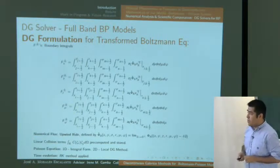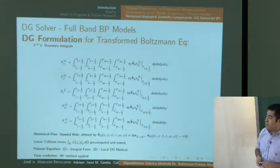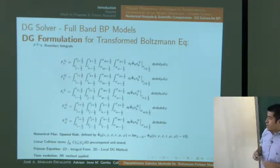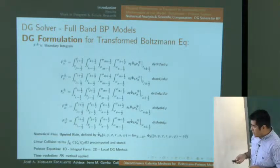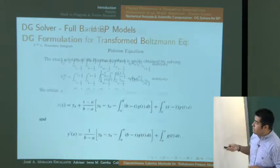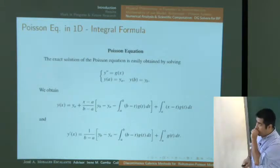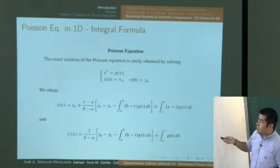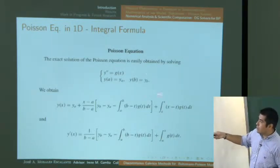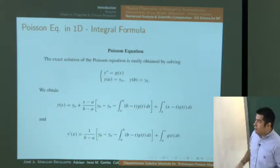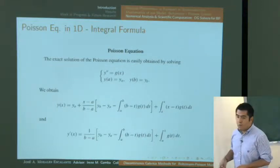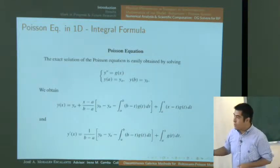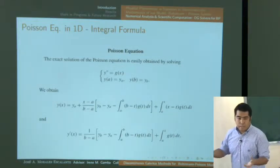For the Poisson equation, in 1D it has a simple integral formulation. In 2D, local discontinuous Galerkin is used. For 1D problems like a diode, following Majorana and Pilatella, Poisson is just a second derivative — the integrals are computed numerically to get the potential and the electric field component.